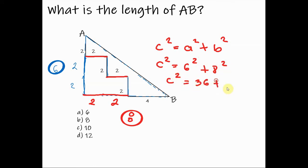So c squared is equal to 36 plus 64. So c squared is equal to 100, and c is equal to 10. So the answer is 10 for the length of AB.